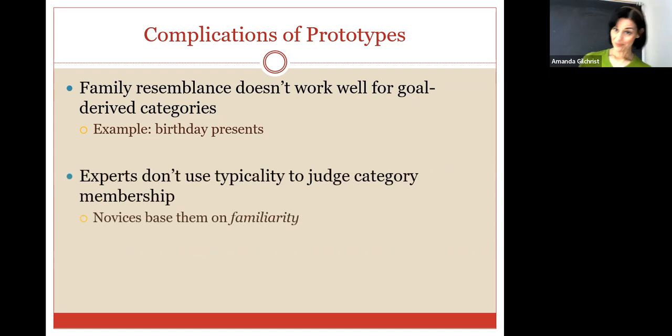But all of those are very different examples of birthday gifts, and they don't look like they have any sort of family resemblance. And I think if you were hard-pressed to find a prototypical birthday gift, I think it would be very hard to do so because everybody's different. Some people like useful gifts. Some people like sentimental, emotional gifts. Some people just want you to buy them another pair of running shoes. That person is me. Additionally, if we're talking about an area of expertise, experts do not use typicality to judge category membership.